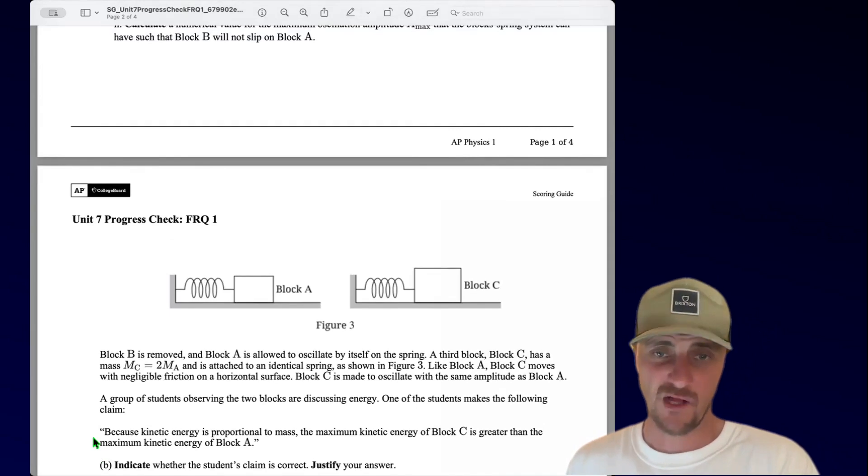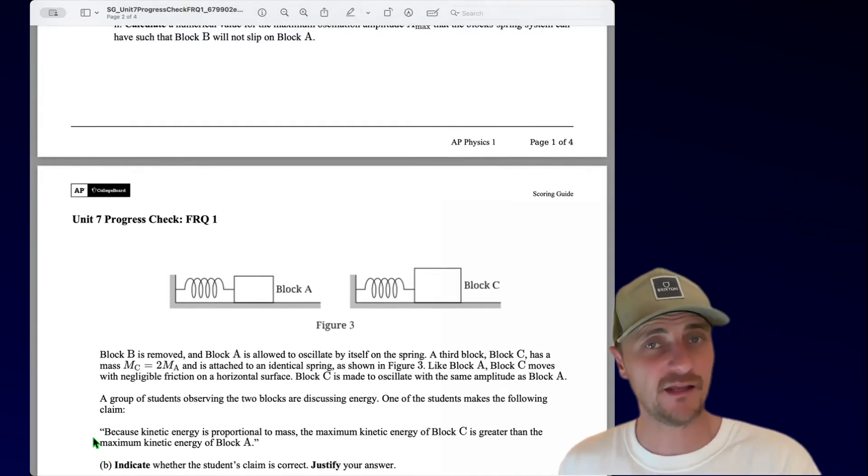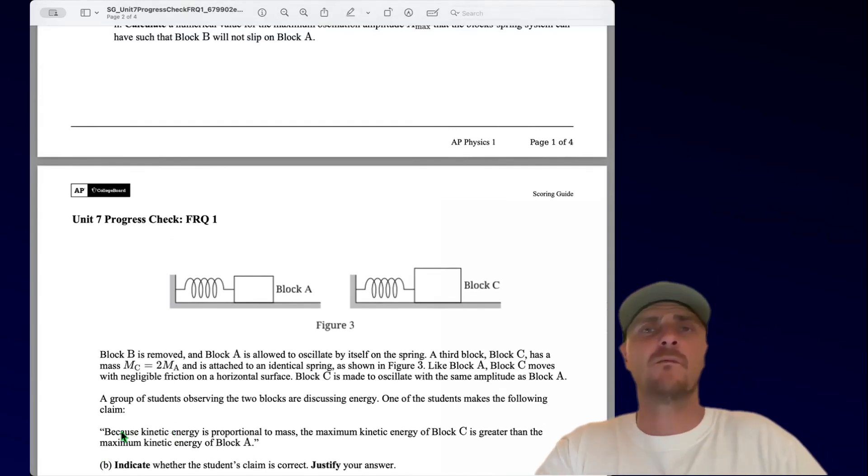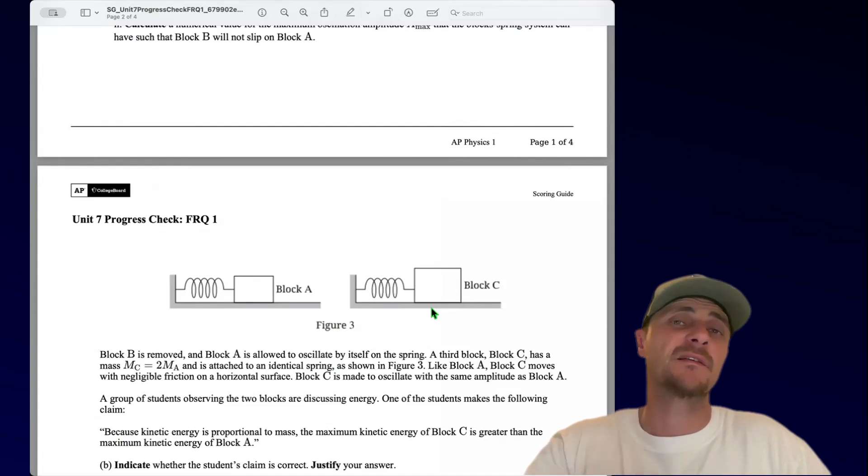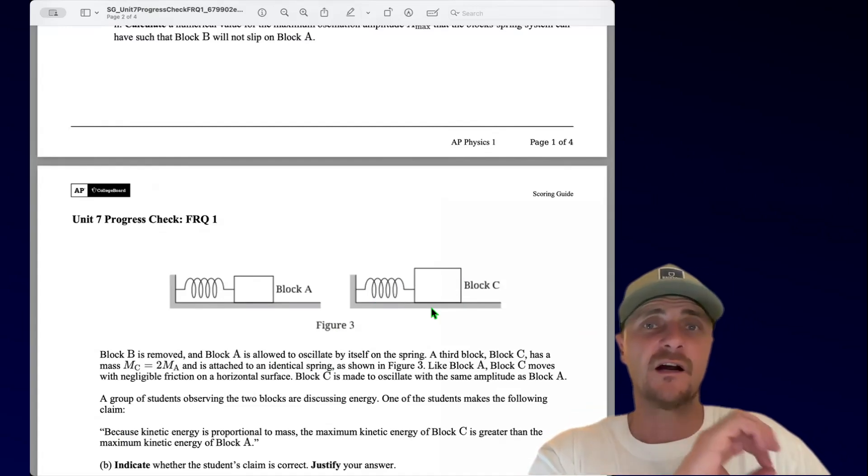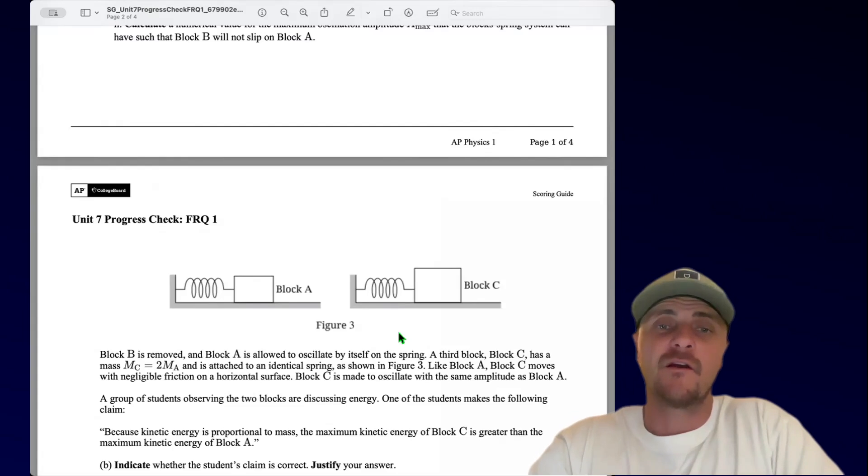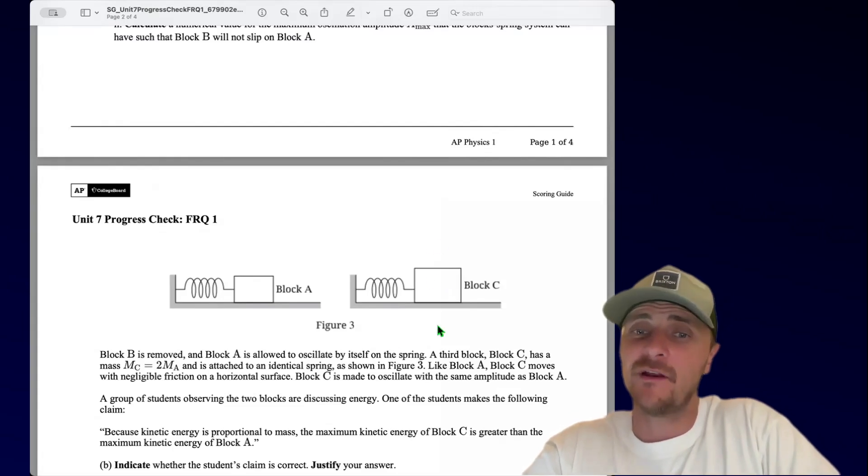It turns out that both blocks have the same exact kinetic energy when they go through equilibrium. And it's very convincing to look at this claim and say, well, block C is twice the mass of mass A. And therefore, since kinetic energy involves mass, this must have a bigger kinetic energy. But it turns out because its mass is the size it is, it's not going as fast when it goes through equilibrium. Having a bigger mass, it has greater inertia and doesn't accelerate to the same velocity that block A does. Therefore, the kinetic energy here at equilibrium turns out to be the kinetic energy here at equilibrium.